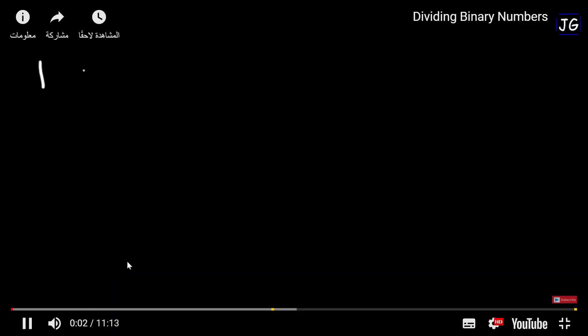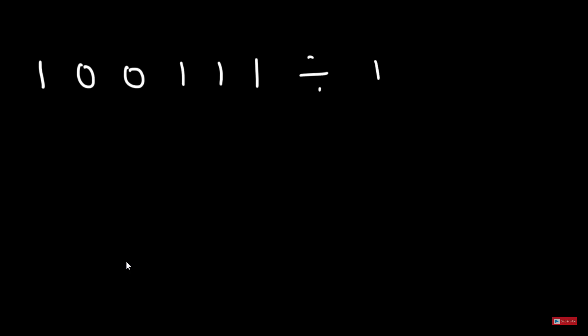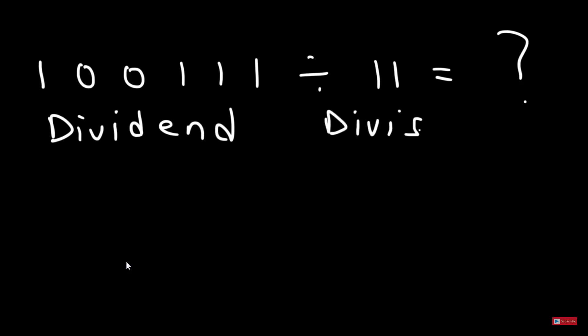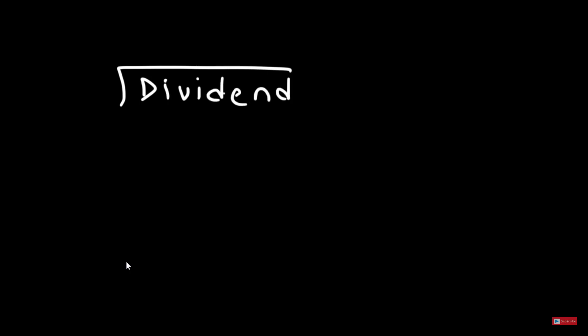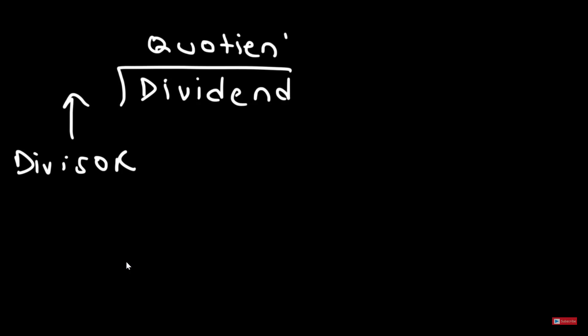I found a nice explanation for binary division — a video on YouTube which explains long division for binary numbers, and I present it here. The first number on the left is the dividend, and we are dividing it by the divisor, which will give us the quotient. We set it up as a long division problem: the dividend on the inside, the divisor on the outside, the quotient at the top, and the remainder at the bottom.